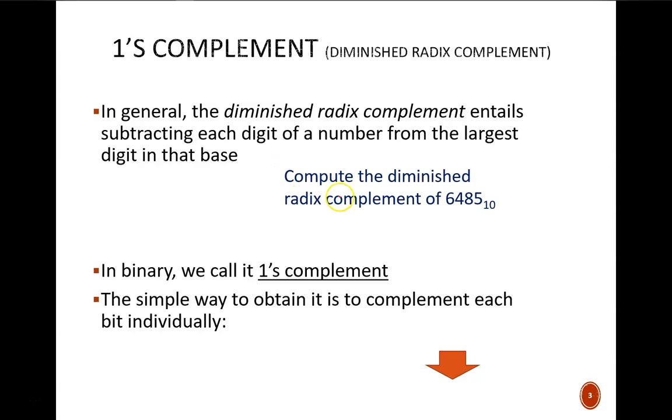It entails subtracting each digit of a number from the largest digit available in that base. So, in this decimal example, I identify the largest available digit, which is 9. I then subtract each digit of the given number from 9 to produce what you see here. So we would say that in decimal, 3514 is the diminished radix complement of 6485.